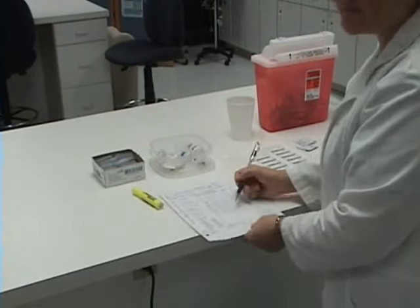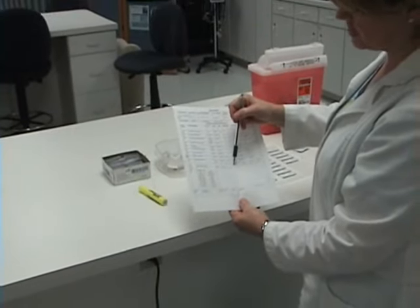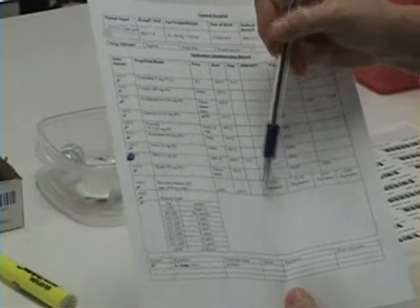So on the MAR, it says 0730 blood glucose, that's BG, and units here. So right here, I'm going to write the 222.